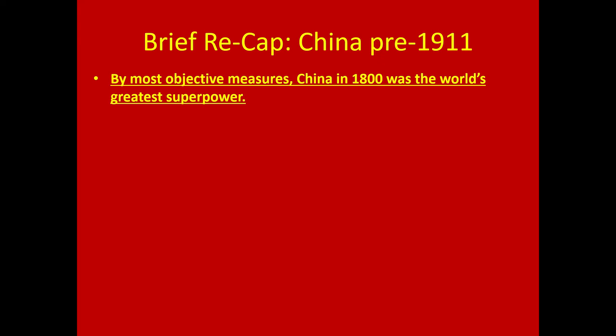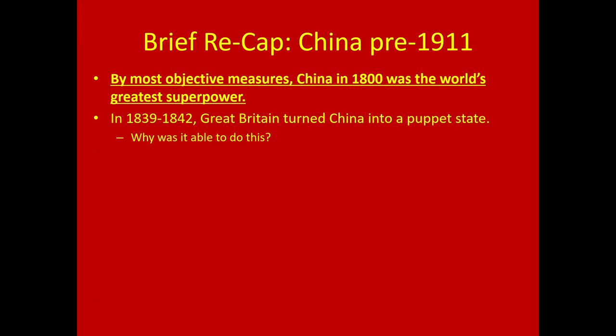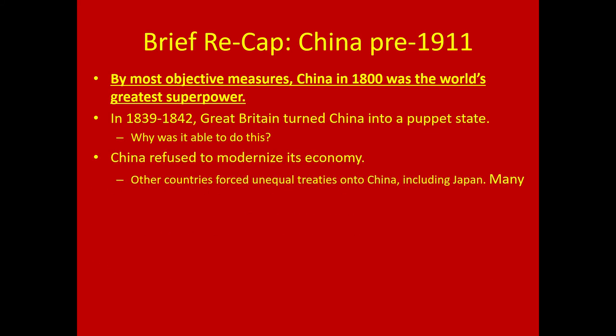As a brief recap: China before 1911, by most objective measures, is the world's greatest superpower — until Great Britain shows up and turns China into a puppet state. How was Britain, a small island nation, able to defeat China? Because of the industrial revolution and its more advanced military technology. This is where we studied the Opium War.